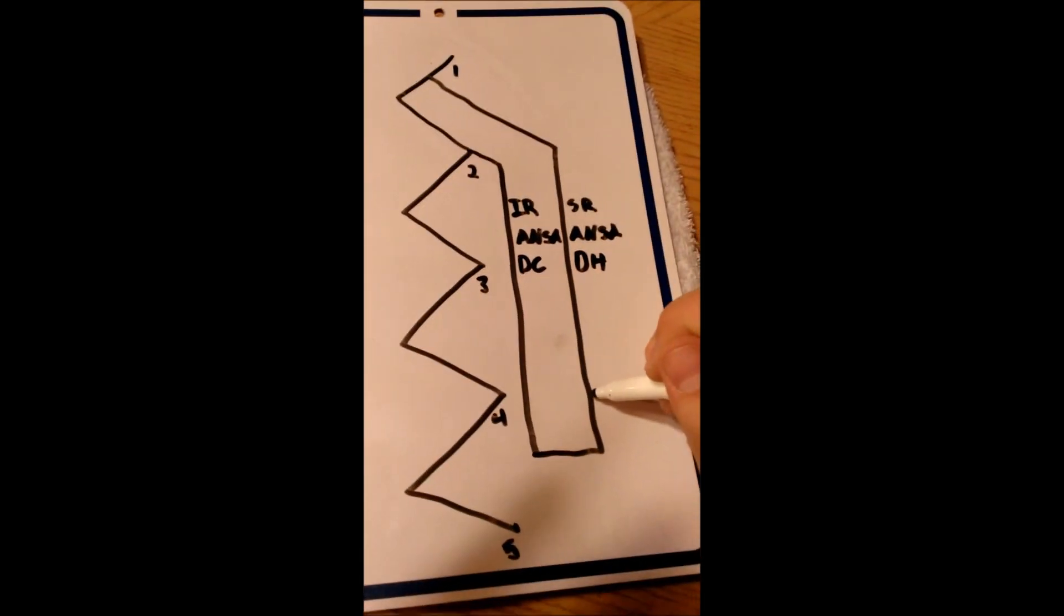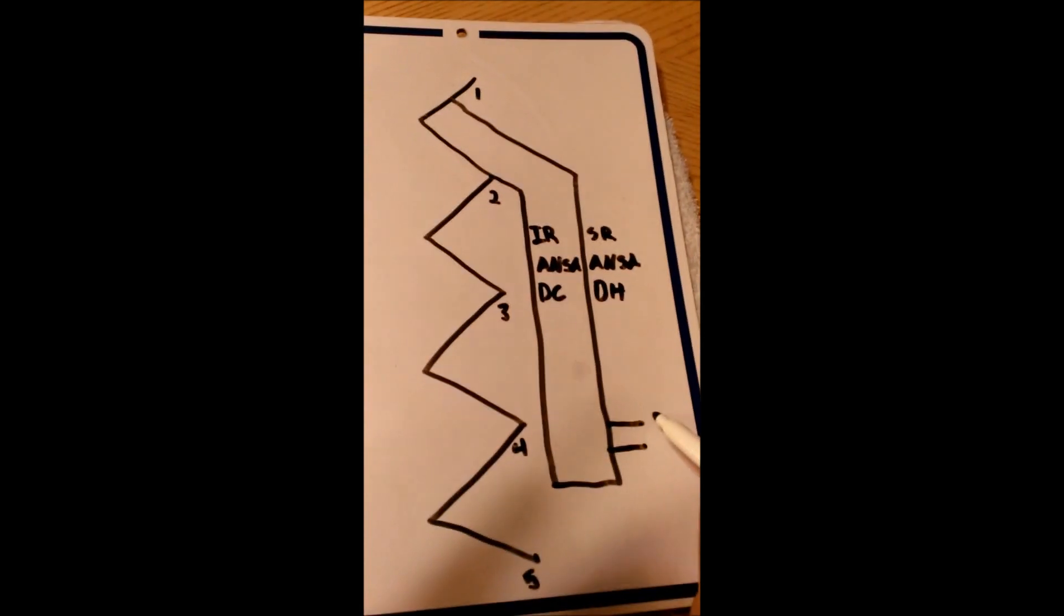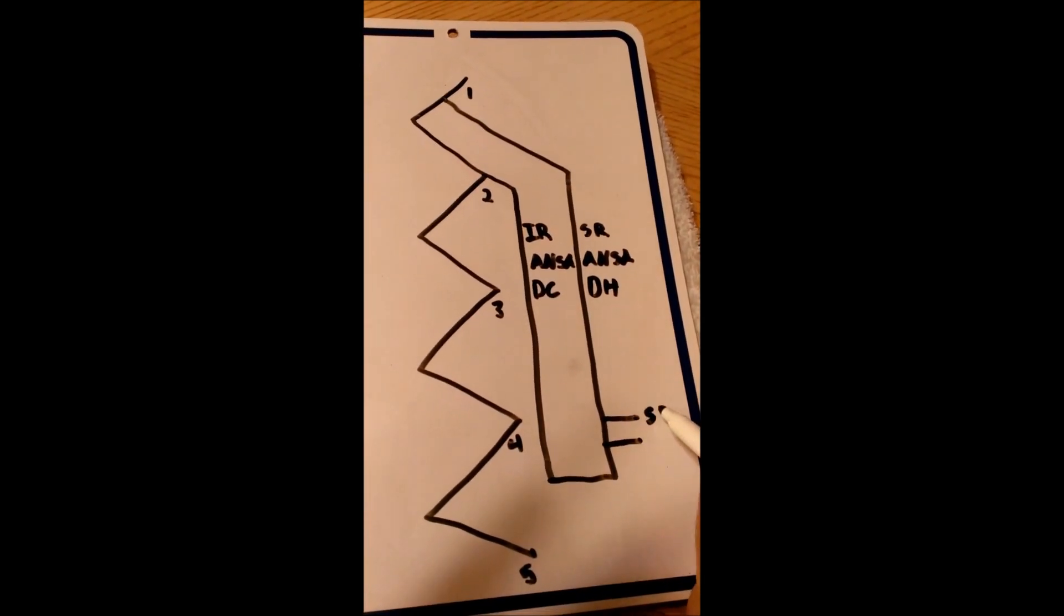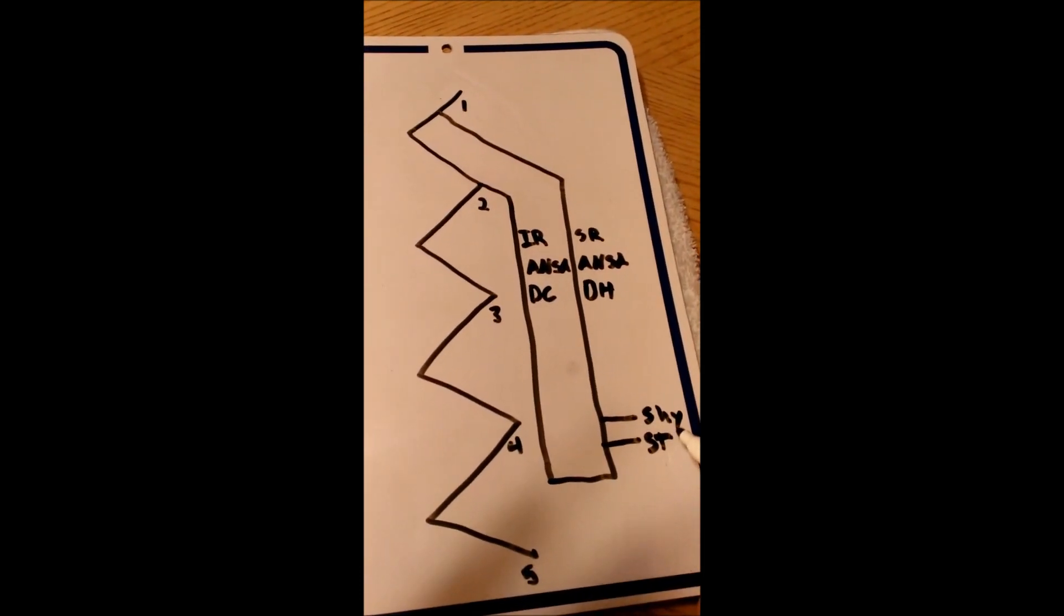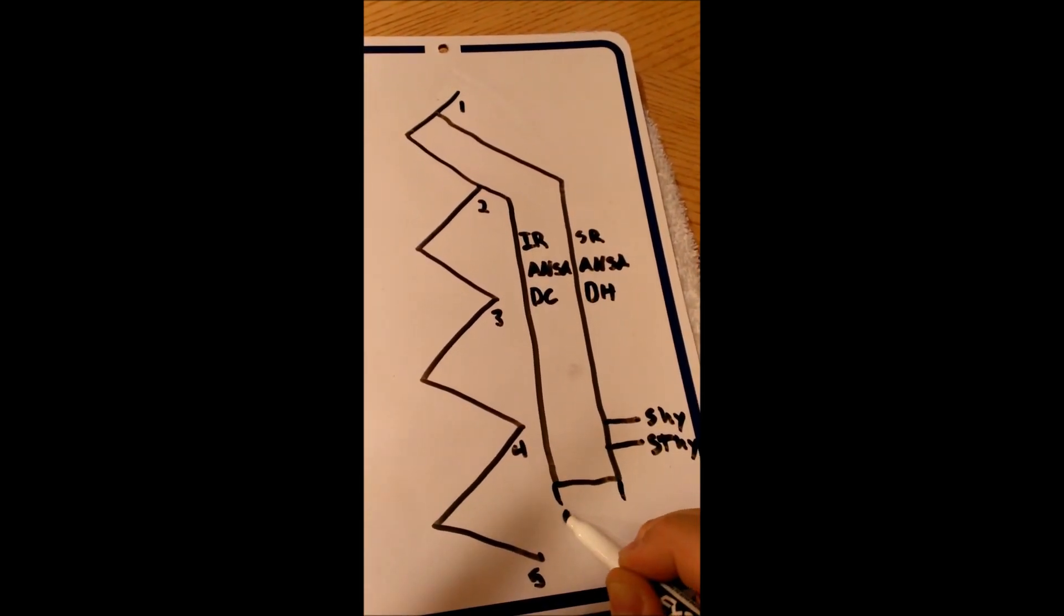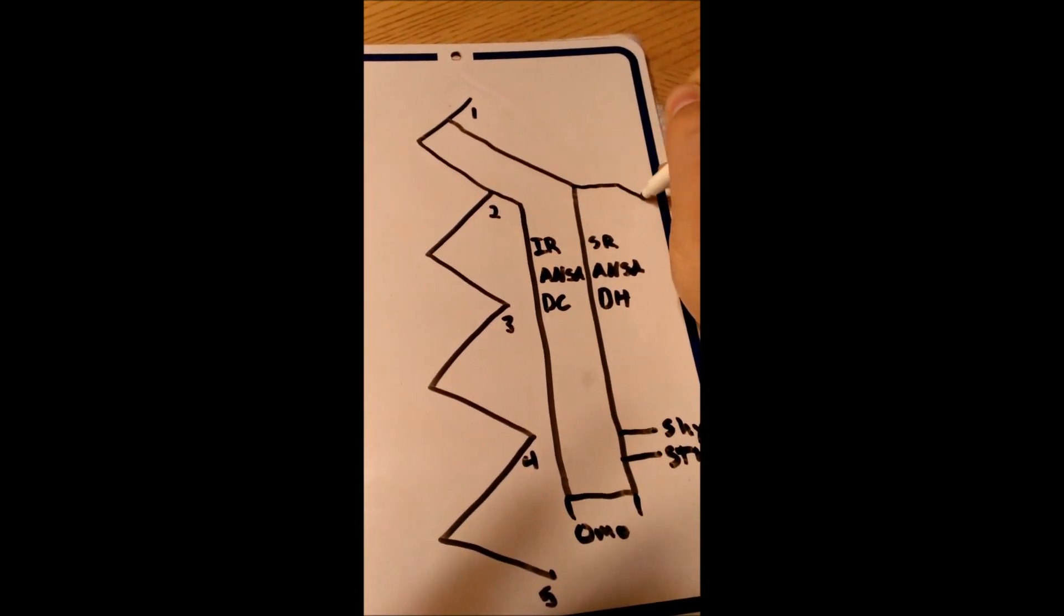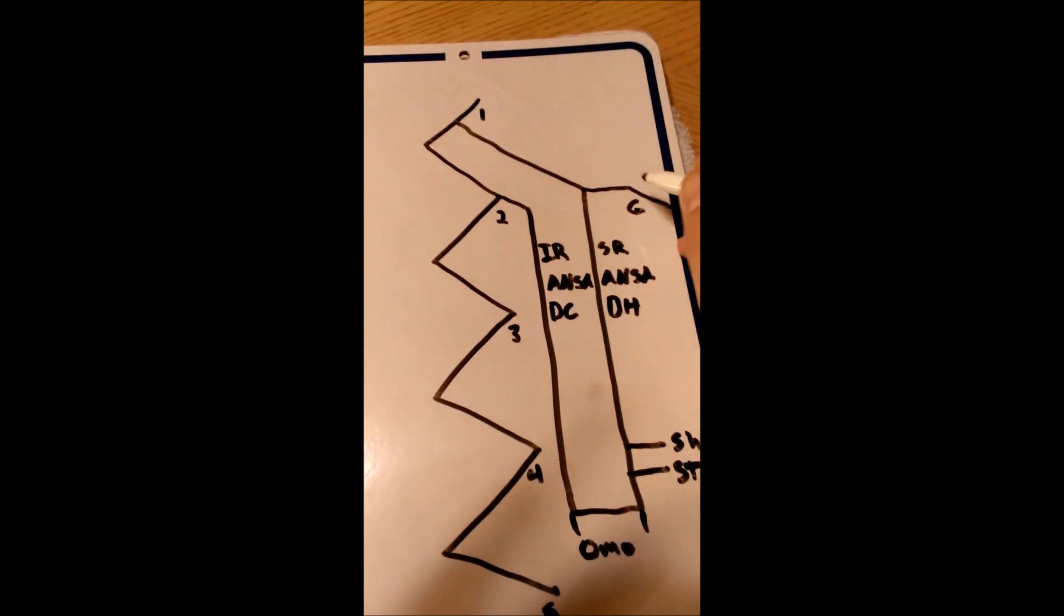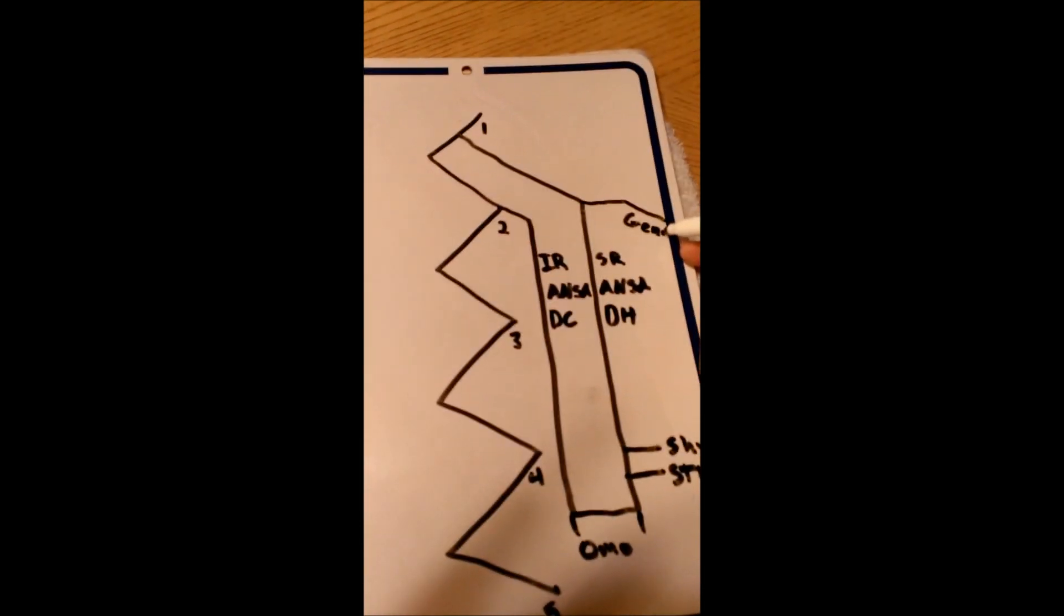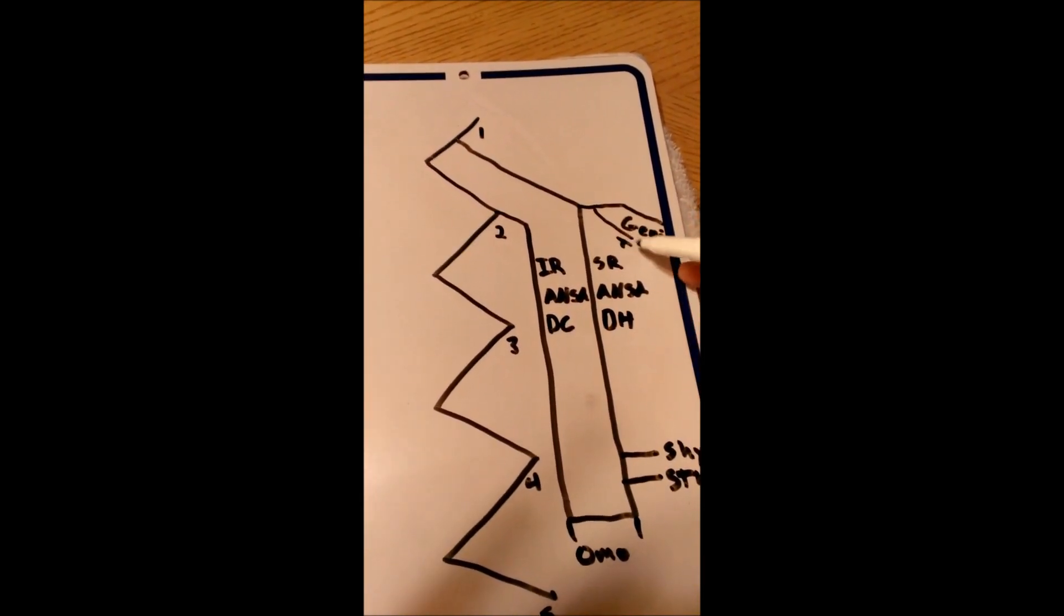So over here, we put in the sternohyoid and the sternothyroid. And then there are two descending branches that go to the omohyoid. Over here, we have the geniohyoid. And this branch is for the thyrohyoid.